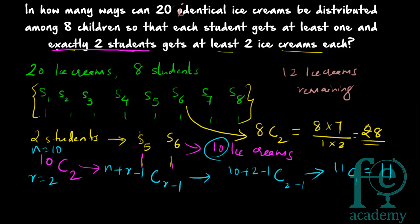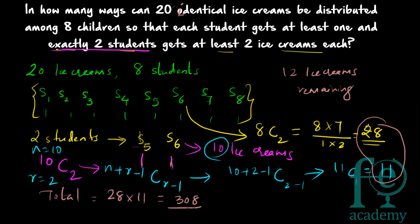We selected 2 students from 8 in 8C2 = 28 ways, and we can distribute the 10 remaining identical ice creams among those 2 students in 11 ways. So the total number of ways is 28 × 11 = 308. There are 308 ways to distribute the ice creams according to the given conditions. Thank you for watching.